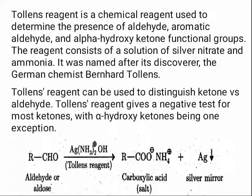Tollens' reagent is a chemical reagent used to determine the presence of aldehyde, aromatic aldehyde, and alpha-hydroxy ketone functional groups. The reagent consists of a solution of silver nitrate and ammonia. It was named after its discoverer, the German chemist Bernhard Tollens. Tollens' reagent can be used to distinguish ketones and aldehydes — it gives a negative test for most ketones.